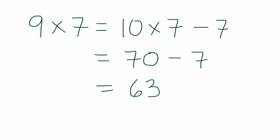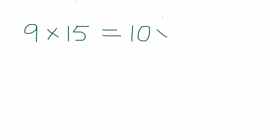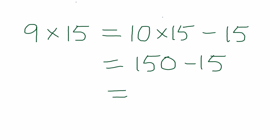And also, this gives you a way to calculate larger numbers multiplied by 9. For instance, if we want to take 9 times 15, we'll just take 10 times 15 minus 15, and that will equal 150 minus 15, and that's 135.